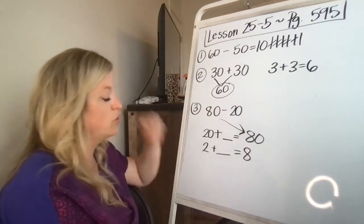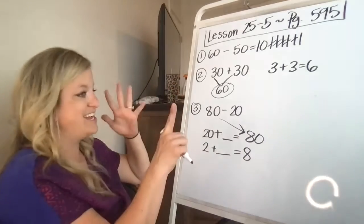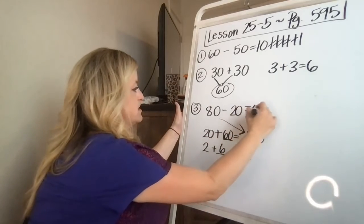You can count on if you don't know. Two, three, four, five, six, seven, eight. It's six. So the answer is 60.